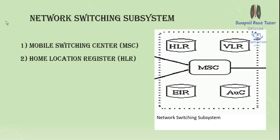Each MSC has a Visitor Location Register (VLR), which is a temporary database that updates whenever a new MS enters its area using the HLR database. The VLR assigns a TMSI (Temporary Mobile Subscriber Identity) to each MS entering the VLR area, which keeps changing. It controls mobile roaming in its area. The VLR database contains IMSI, MSISDN, location area, and authentication key.